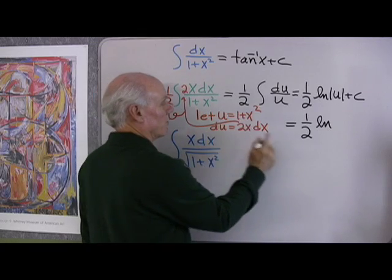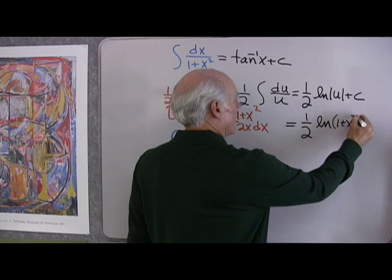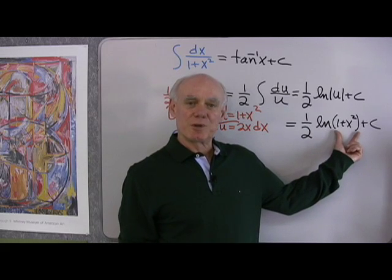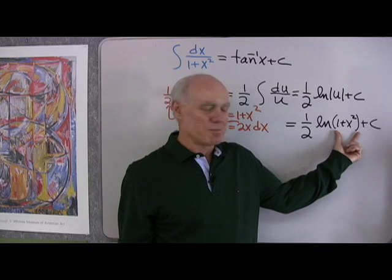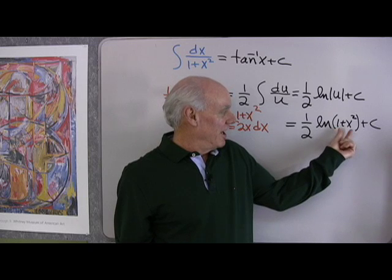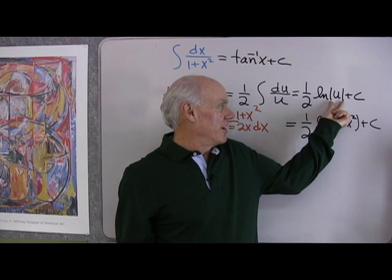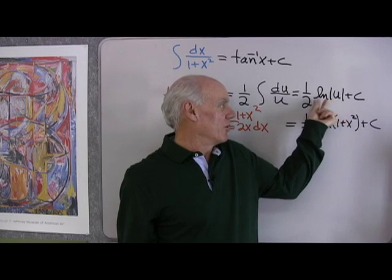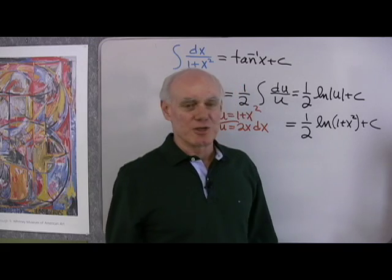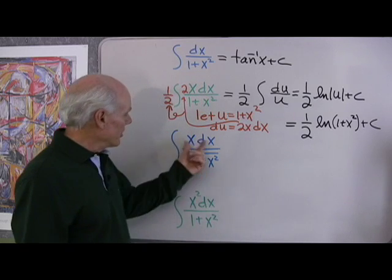u, remember was 1 plus x squared, so 1 plus x squared plus c. And look, I can drop the absolute value symbols here because I know that 1 plus x squared is positive no matter what x is. The smallest it will ever be is 1, and for every number of x other than 0, it's going to be larger than that. Since I know that this argument is always positive for any value of x, I just drop the absolute value.